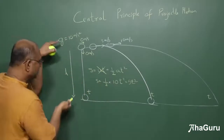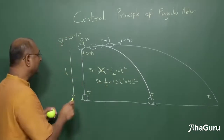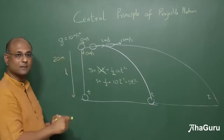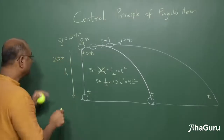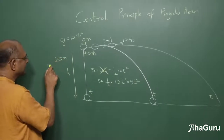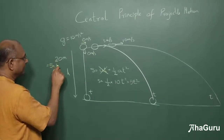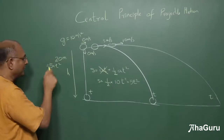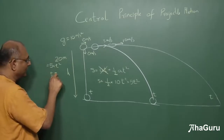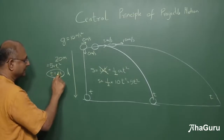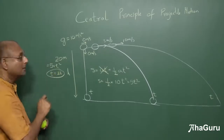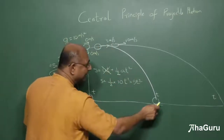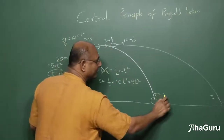Suppose the height is 20 metres. Then 20 = 5t², so t² = 4 and t = 2 seconds. This ball takes 2 seconds to hit the ground — and so does the horizontally thrown ball.